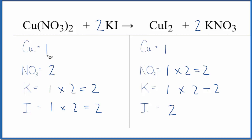This is Dr. B with the balanced equation for Cu(NO3)2 plus KI, copper 2 nitrate plus potassium iodide. Thanks for watching.